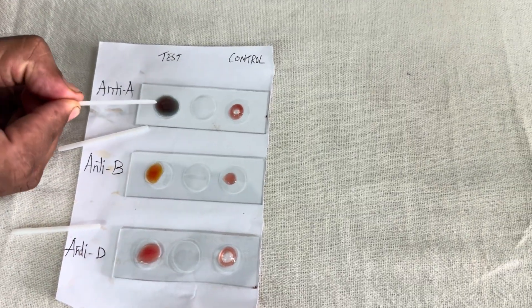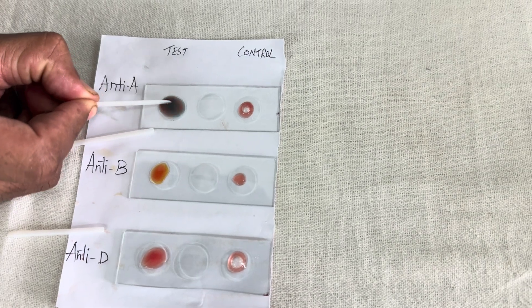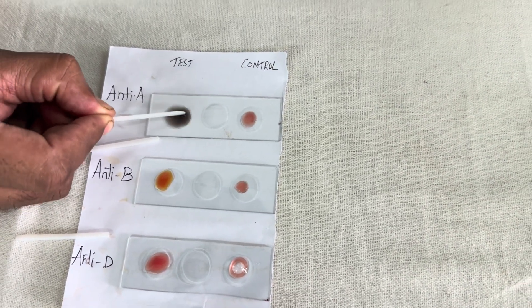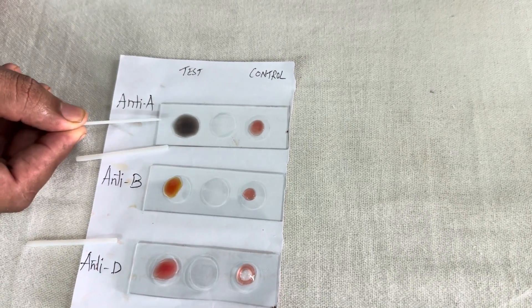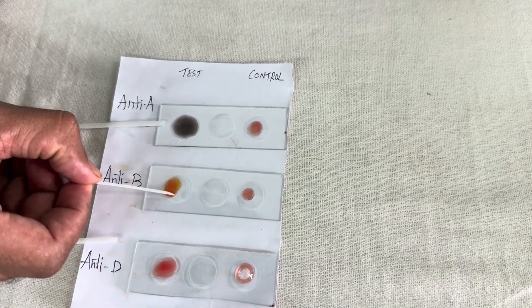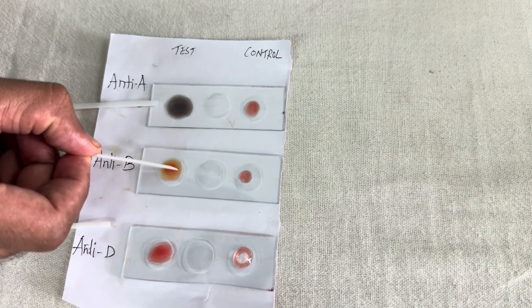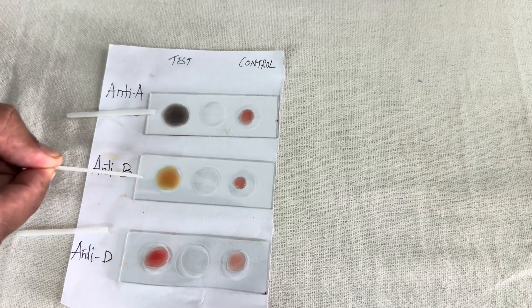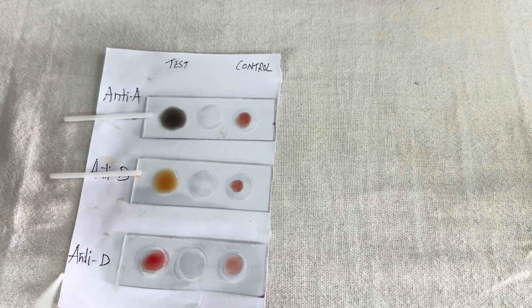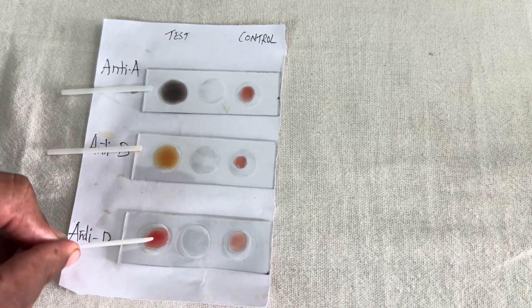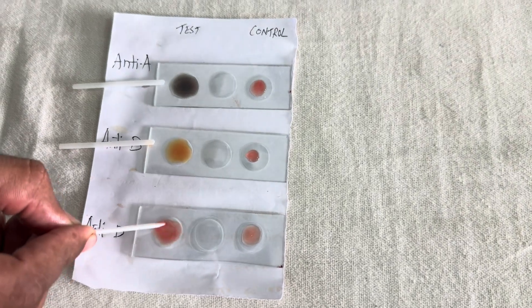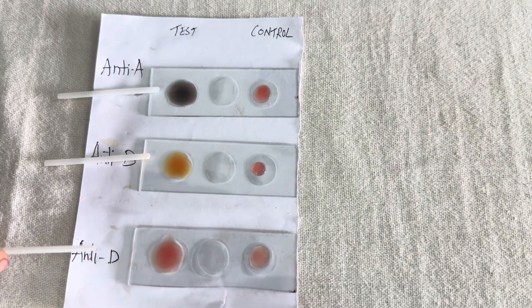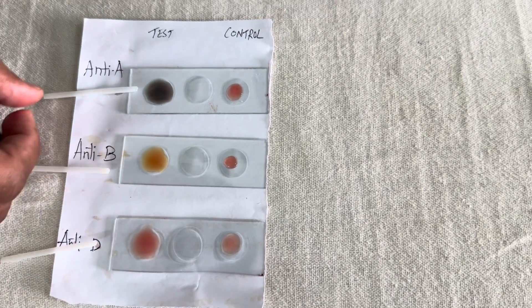Now thoroughly mix it using these plastic sticks. You can use match sticks or any other sterile apparatus. Remember you should not use the same stick for different anti-sera. For anti-A, keep it separately, then anti-B and anti-D. Mix it thoroughly. Then we wait for 5 to 10 minutes, maximum up to 15 minutes.